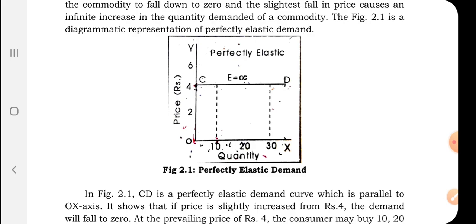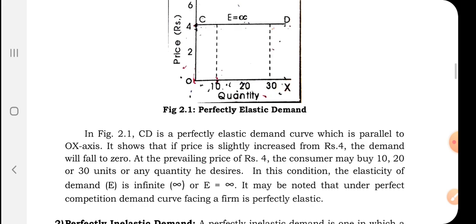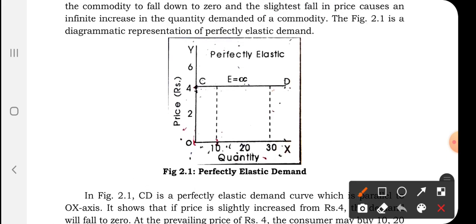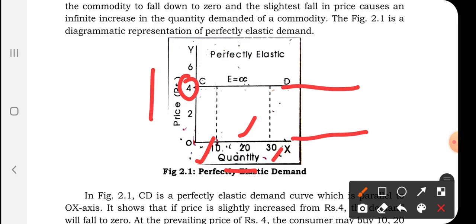In the graph of perfectly elastic demand, the OY axis indicates the price of the commodity and the OX axis indicates the quantity demanded. At the prevailing price of rupees 4, the consumer is ready to buy 10, 20, 30, or n number of units. But when the price falls down to rupees 2, there is an infinite change in the demand of the consumer.